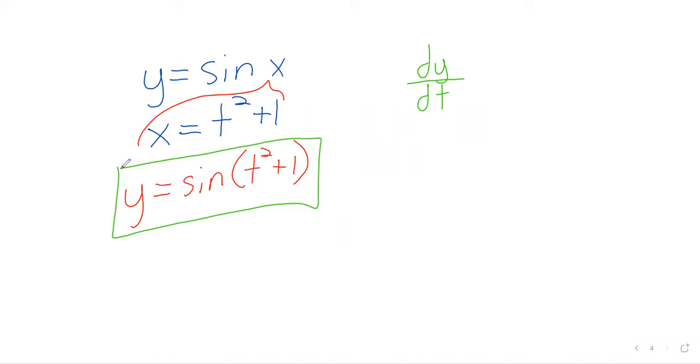It makes sense to look at that relationship and ask what the derivative is. And what the chain rule says is to find this derivative. Well, we have a function there. And we have a function there. And we can take the derivative of the sine. And we can take the derivative of t squared plus one.